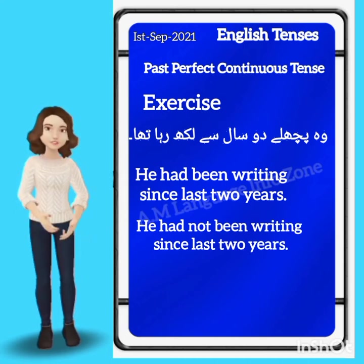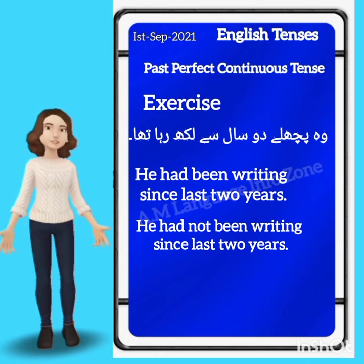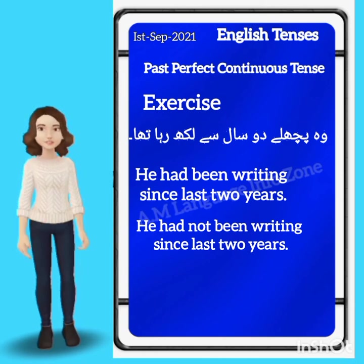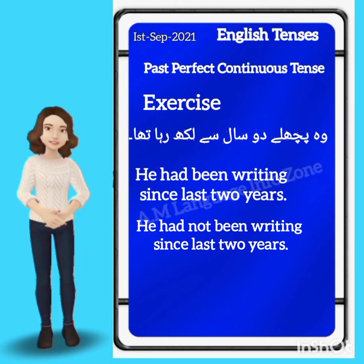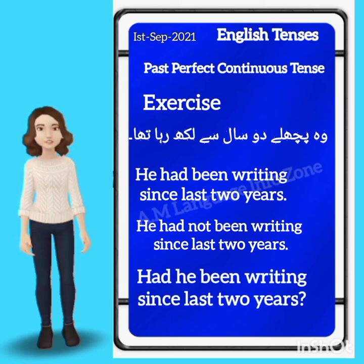'Since' is used here because there is a limited time frame and we know exactly when the time happened — 'last two years.' Now for the interrogative form: 'Had he been writing since last two years?' And the negative interrogative: 'Had he not been writing since last two years?'